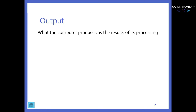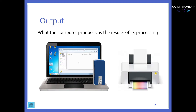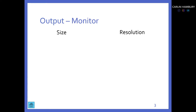Output is what the computer produces as a result of processing. Processing is when we are putting things into the PC — me typing on my keyboard, using my mouse, doing some editing. The results come out onto my screen or out of my printer, and that's why it is output. Examples of output devices include our screen, our speakers, and our printer.